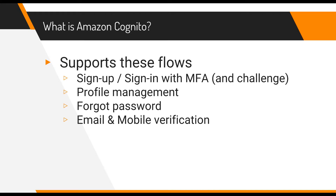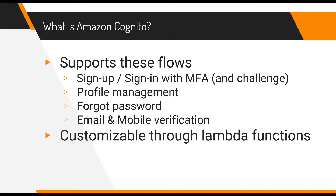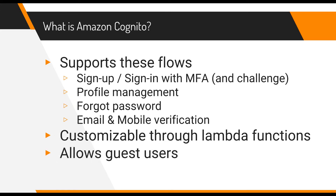It also offers forgot-password and reset-password workflows, as well as email and mobile verification as part of the workflow — users can be required to verify their email address and phone number before being enabled. Cognito also offers lifecycle hooks that let you invoke custom Lambda functions before and after certain states in these workflows, called lifecycle triggers. Additionally, it supports unauthenticated or guest users: you define an IAM role for guest users and Cognito generates a token based on that role, allowing you to control guest access level.